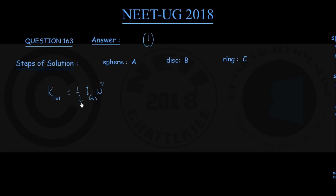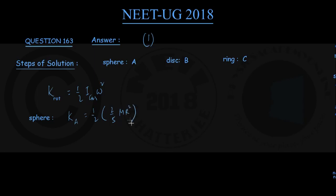Keeping this equation in mind, for the sphere the rotational kinetic energy — calling it K_A — will be half times the moment of inertia I_CM of a sphere, which is (2/5)mr², kept in brackets, times omega squared. The 2s cancel, giving us (1/5)mr²ω².